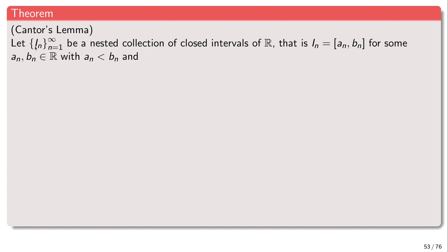Cantor's Lemma says the following. Suppose that we have a nested sequence of closed intervals which are also bounded, so each interval is represented by its endpoints a_n and b_n. In order for this to be an interval, a_n must be strictly smaller than b_n — we are not considering degenerate intervals where a_n equals b_n and the interval collapses to a single point.